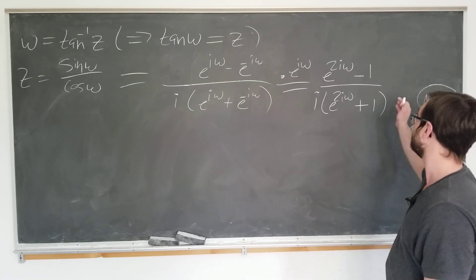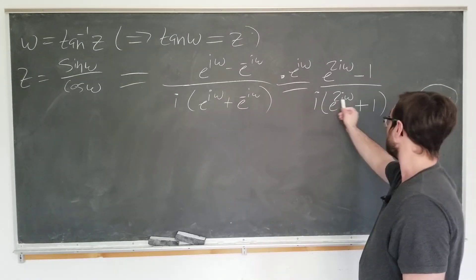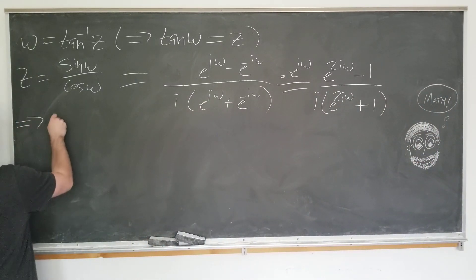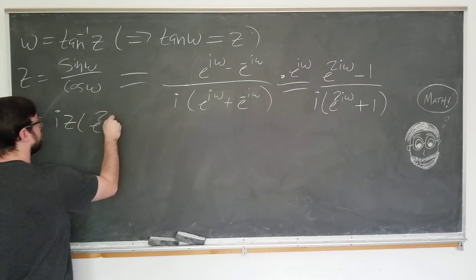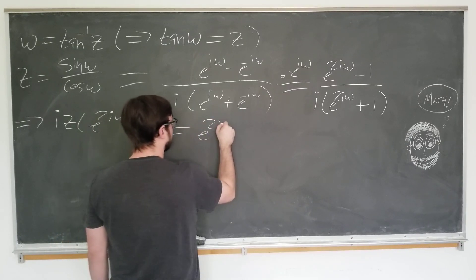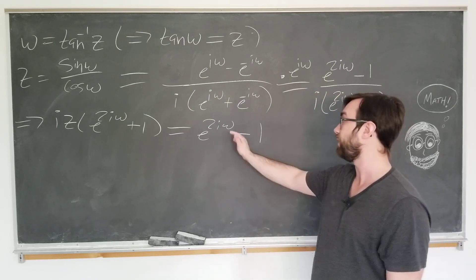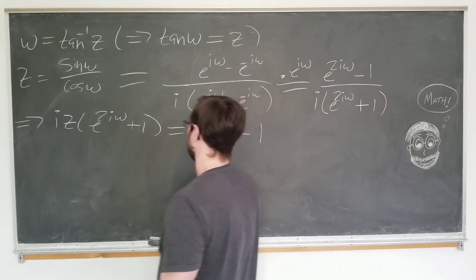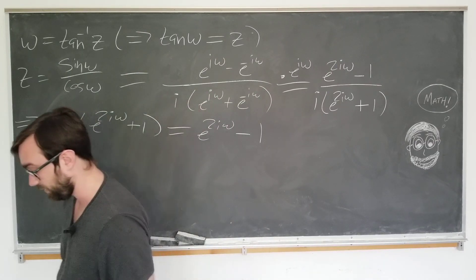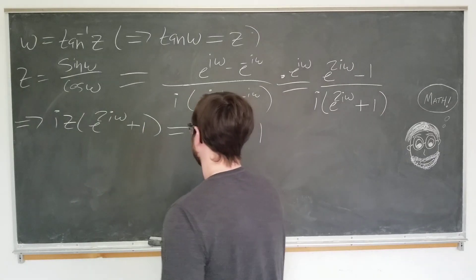Now we want to solve for omega or w in terms of z. The next step is to multiply both sides of the equation by the denominator, which is i e to the 2i omega plus 1. So i z e to the 2i omega plus 1 is equal to e to the 2i omega minus 1. We want to solve for e to the 2i omega.